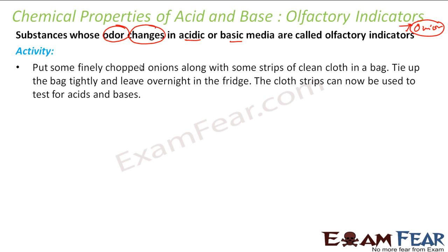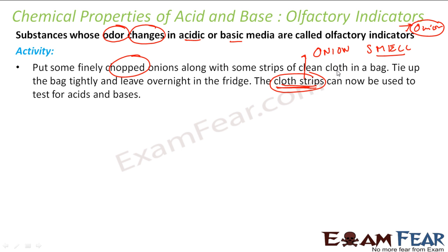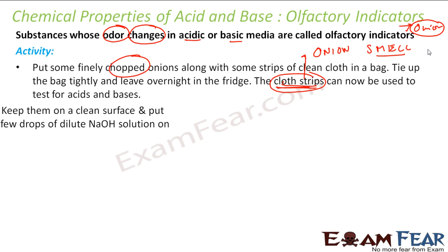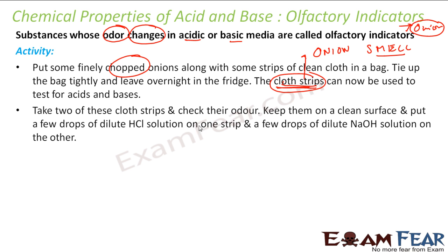We will get some chopped onions with a clean cloth strip, put this in a bag, and put it in the fridge overnight. What happens is this cloth strip will get the smell of onion — that is what we are looking for. This strip has onion smell because you have tied it up with onion and put it in the fridge for one night. And we know that the onion smell goes off with basic substances.